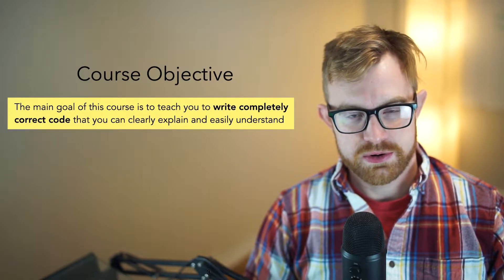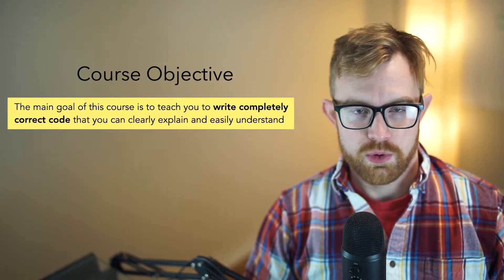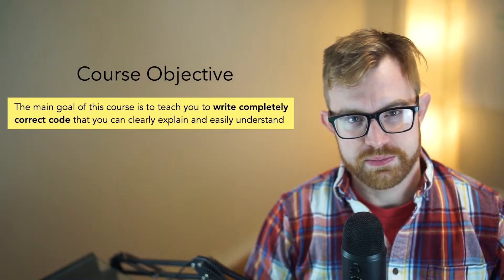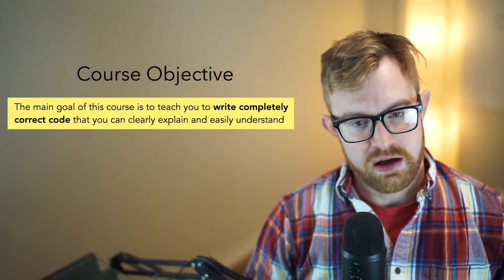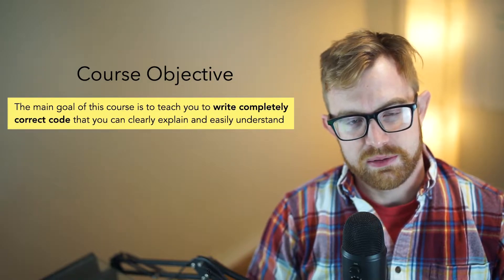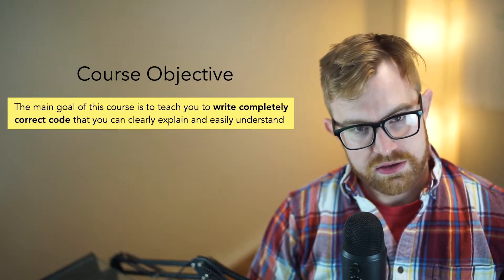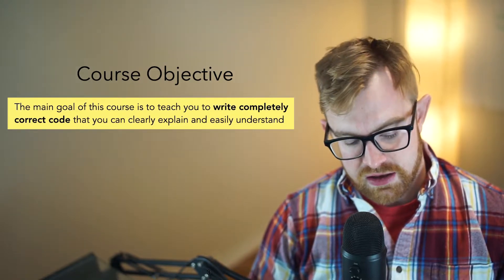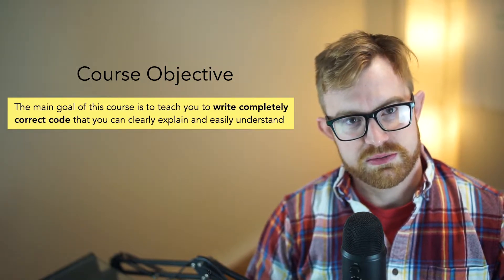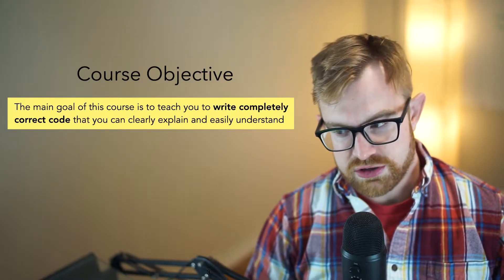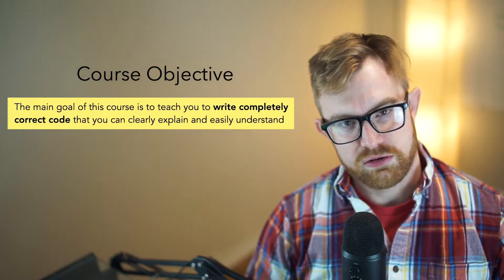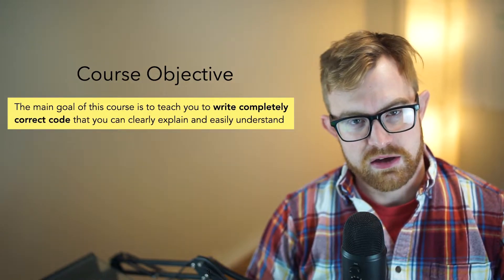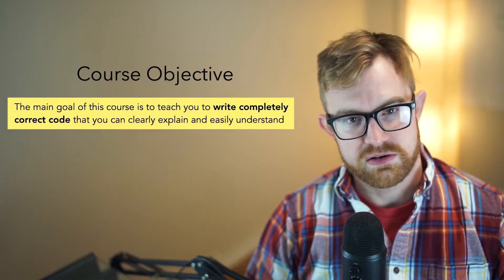So whenever you design a course, you always have to ask yourself, what's the main course objective? What is the main thing that I'm really looking for students to get out of the course? And once you choose that, a lot of the rest of the course pieces fall into place. This semester and for the past few semesters when I've taught this course, I've focused on the following high level course objective, which is that we really want you to be able to write completely correct code that you can very precisely understand and you can easily explain to somebody else or when you go back to read it for yourself.